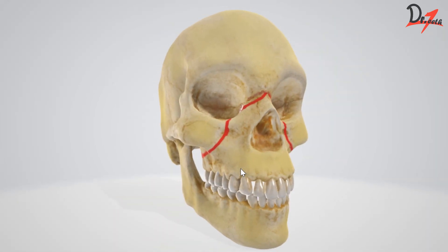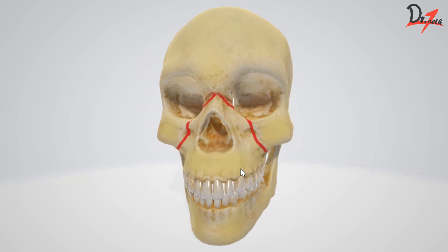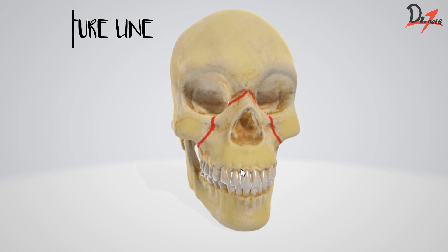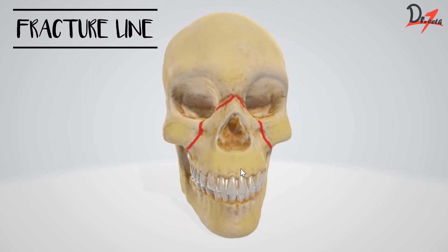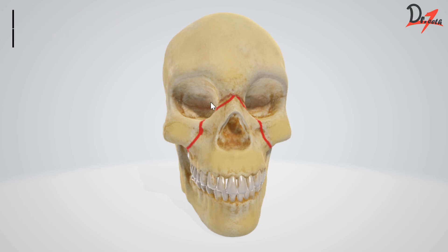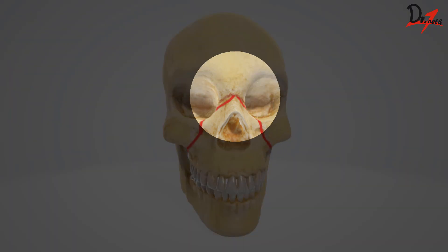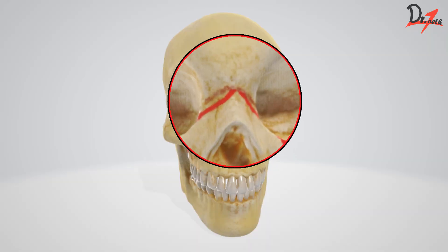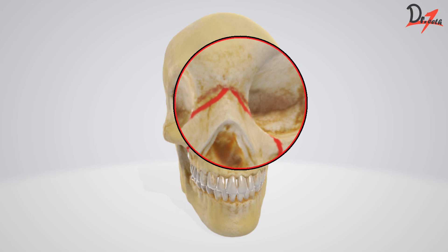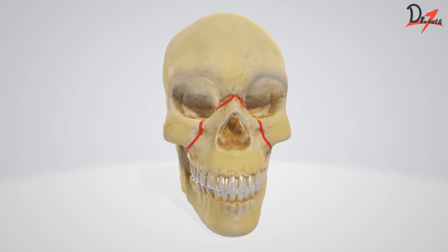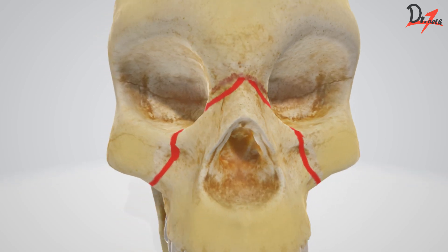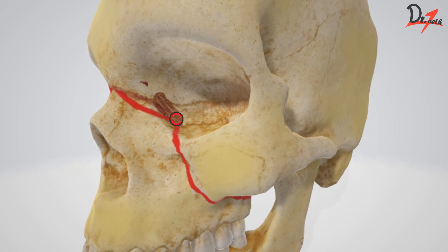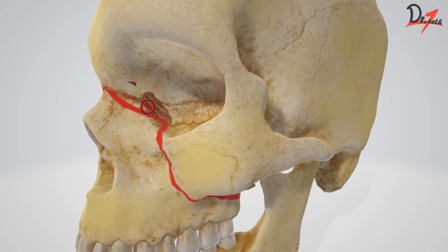Here we can see our model. Let us try to understand the fracture line in the LeFort 2 fracture. The LeFort 2 fracture happens whenever there is a blow near the level of the nasal bone. As you can see here, this is our frontonasal suture shown in brown. The fracture line will run anteriorly from the frontonasal suture and it will reach the medial side of our orbit.